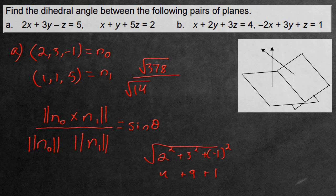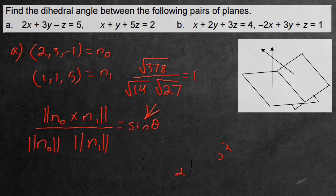Now we want to find the magnitude of this normal and the next one. For the first normal n0, that's 2 squared plus 3 squared plus negative 1 squared, which is square root 14. For the next magnitude, we have 1 squared plus 1 squared plus 5 squared, giving us square root 27. This gives us the sine of the angle, which equals 1. If you take the arc sine of this, you'll get 90 degrees. So that's the degrees between these two planes.